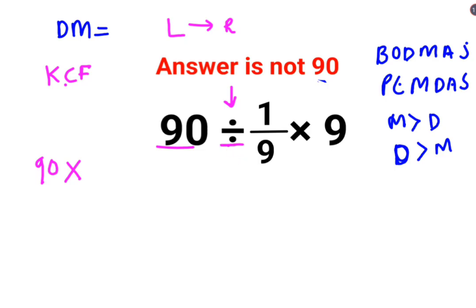And F stands for taking the reciprocal of 1/9, which is 9 times 9. We'll keep the rest as it is. So 90 times 9 gets you 810, times 9 gets you 7,290.